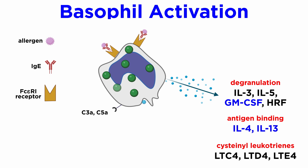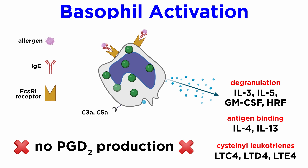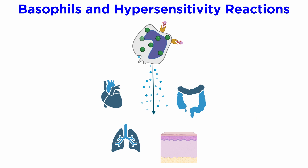Activated basophils produce cytokines including IL-4, IL-13, and GM-CSF. IL-4 is produced in large quantities after basophil activation and is also known to act on downstream TH2 cell differentiation. Unlike mast cells, basophils do not produce PGD2.